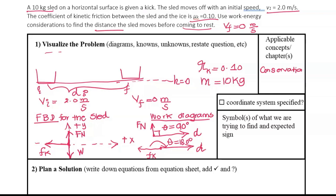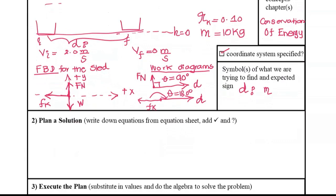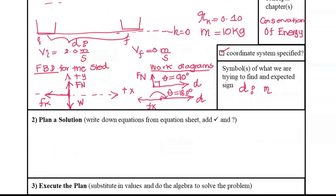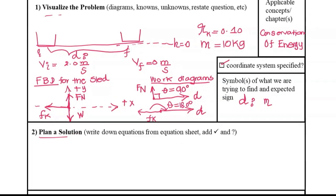The applicable concept is conservation of energy, which we'll use to solve for the distance traveled by the sled. The coordinate system has right as positive. We are solving for d, and the unit is meters — it's a scalar quantity so we don't need to worry about sign. Now let's plan the solution.